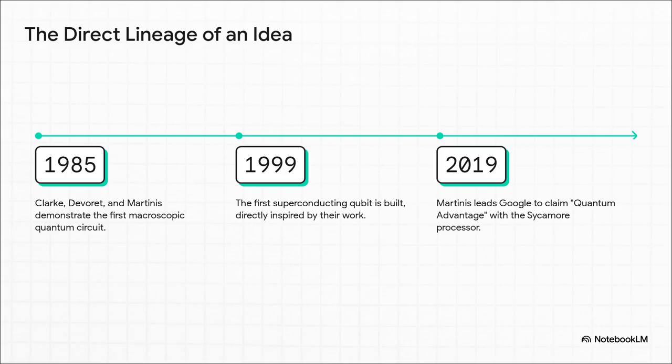What's so amazing is you can draw a direct line from their work to today. In 1985, they demonstrate their circuit. By 1999, the first real superconducting qubit is built, directly using their methods. And then, fast forward to 2019, who leads the Google team that claims quantum advantage with their sycamore chip? John Martinis, the same pragmatic engineer from the original team, now scaling up the very same ideas. It's a straight line from their lab to the quantum revolution.